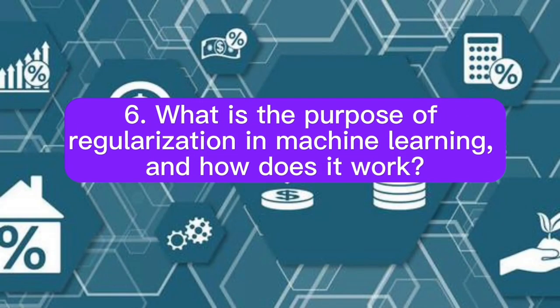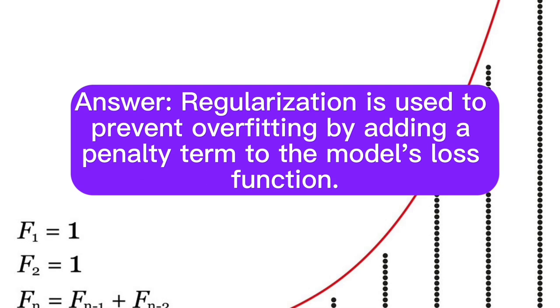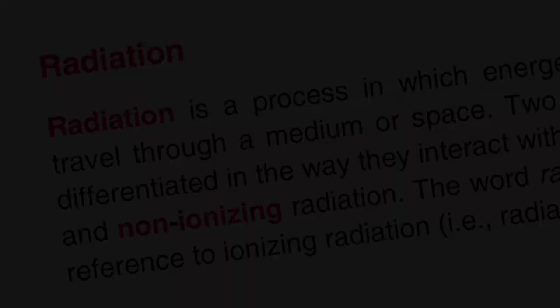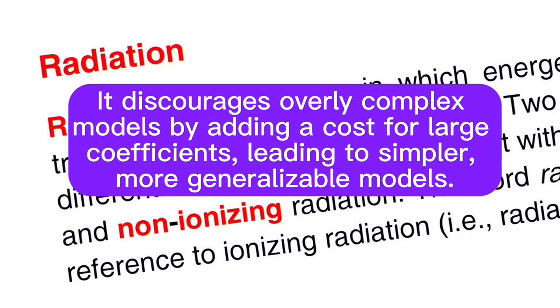Question 6: What is the purpose of regularization in machine learning, and how does it work? Answer: Regularization is used to prevent overfitting by adding a penalty term to the model's loss function. It discourages overly complex models by adding a cost per large coefficients, leading to simpler, more generalizable models.